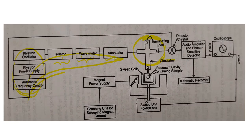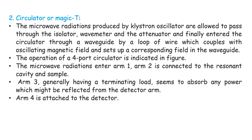Now we discuss the circulator, also called the Magic T because of its T-like shape. The microwave radiations produced by the klystron oscillator pass through the isolator, wave meter, and attenuator, and finally enter the circulator through a waveguide — a hollow rectangular copper or brass tube. The circulator consists of a four-port device. Microwave radiations enter through arm 1. Arm 2 is connected to the resonant cavity and the sample. Arm 3 has a terminating load to absorb any excess power. Arm 4 is attached to the detector.